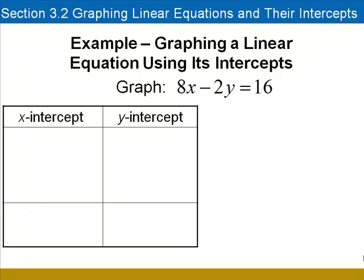In this example, we'll graph the line 8x minus 2y equals 16. Beginning with the x-intercept, we'll put in 0 for y. We have 8x equals 16. Dividing by 8, we have our x-intercept at 2 comma 0.